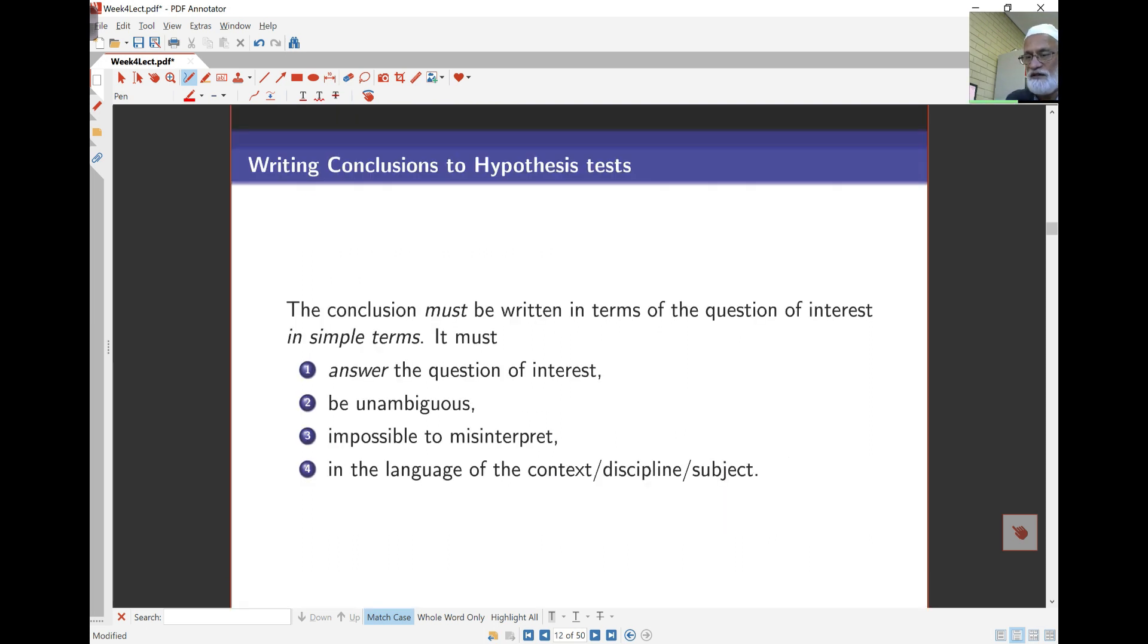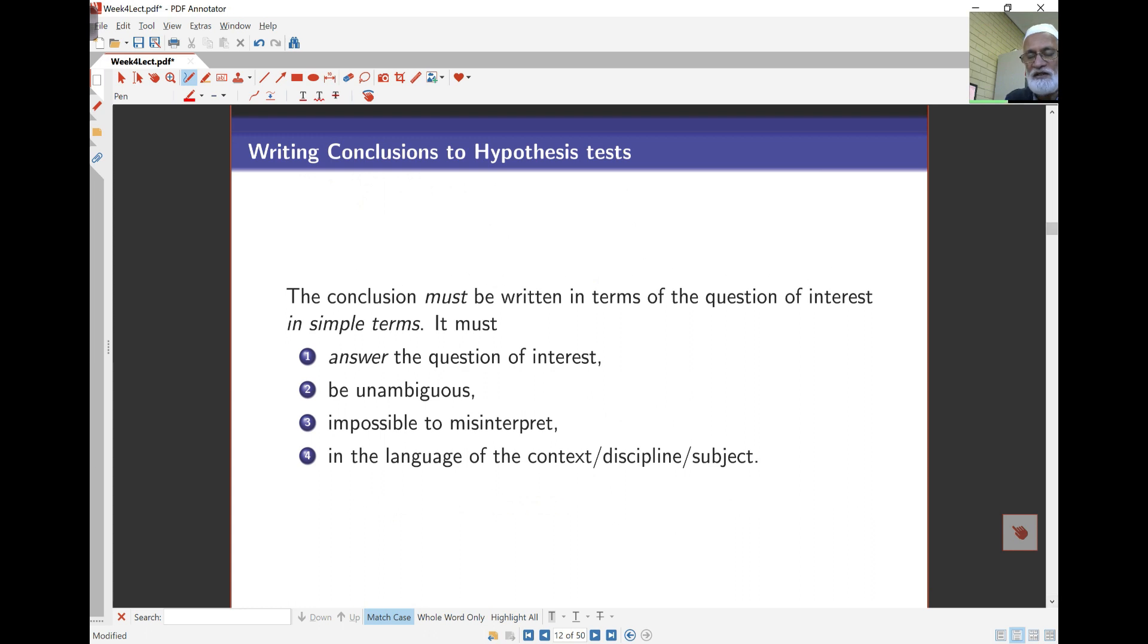Now, that's one example we've just done, and just before we move on to the next part of this lecture, the main thing here about writing conclusions to hypothesis tests is it must be written in terms of the question of interest. You can't just say I reject or not reject the null hypothesis. You must write it back in terms of the actual question. Answer the question of interest. Be unambiguous. Be impossible to misinterpret. And it must be in the language of the context of the discipline and subject. It must be concise. You don't require to write a whole essay on this. Usually in a few lines. That's enough for this one. We'll continue in the next lecture. Thanks, bye.